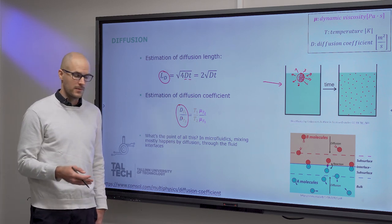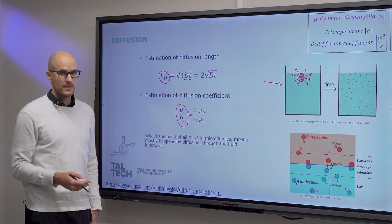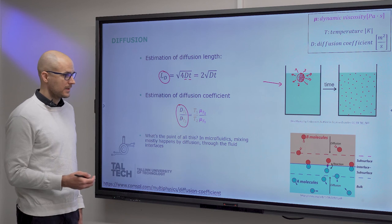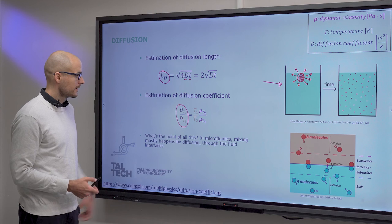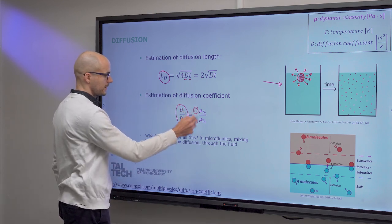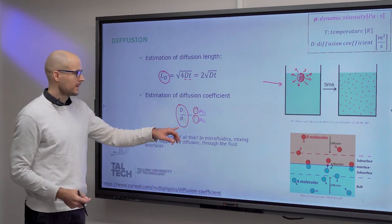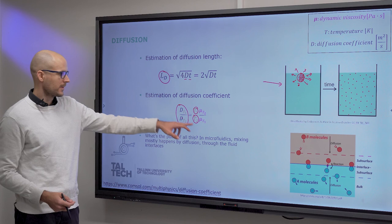In microfluidics, mixing mostly happens on the interface by diffusion. This is important because if you just leave liquids next to each other, it will take a mighty long time for them to mix. In macroscopic flows, you have turbulence that takes care of that. But on the micro scale, you need to increase the surface area to speed up the mixing. I would also like to call your attention to the temperature dependence in both the diffusion coefficient as well as the viscosity.